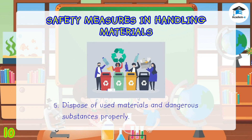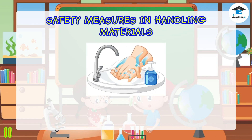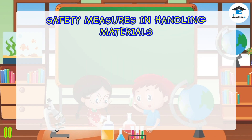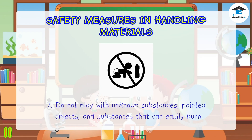Five: dispose of used materials and dangerous substances properly as indicated by the manufacturer. Six: wash your hands thoroughly with soap and water when you use or touch harmful substances. Seven: do not play with unknown substances, pointed objects, and substances that can easily burn.